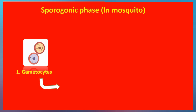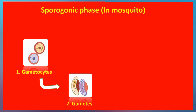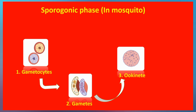Within the midgut, the gametocytes develop into male and female gametes. The mosquito picks up both male and female gametocytes from the blood, and these further develop into male and female gametes in the midgut. The male and female gametes then undergo fertilization to produce the zygote, which is called the ookinete.